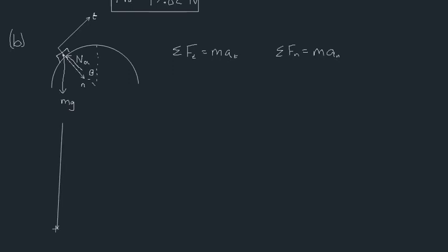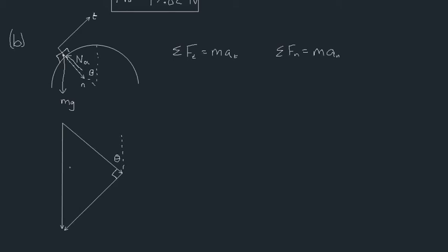Here is our force due to gravity. The component of gravity in the normal direction is roughly mg·cosθ, and the component in the tangential direction is mg·sinθ. Notice it makes a right angle triangle. Since this angle is θ, the normal component is mg·cosθ and the tangential component is mg·sinθ.